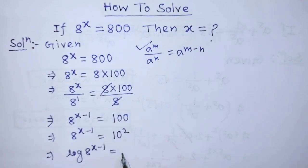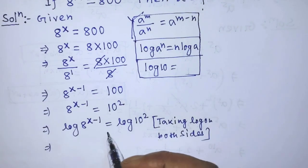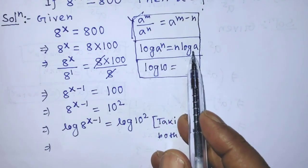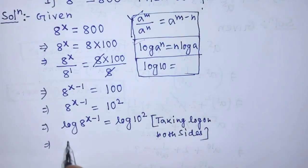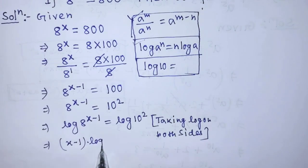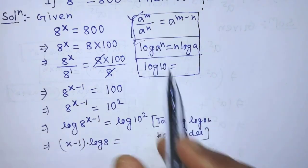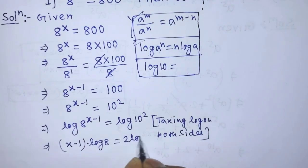...equals log of 10 to the power 2. To simplify the left hand side of this equation, we apply the formula: log of a to the power n is equal to n times log of a. According to this formula, we write x minus 1 times log of 8 is equal to 2 times log of 10.